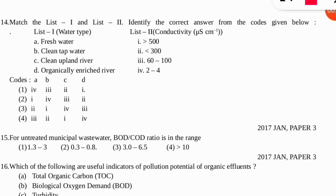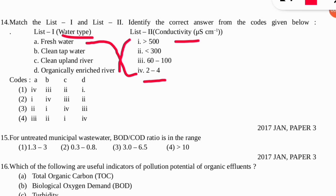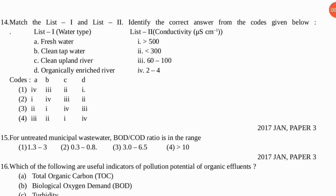The next question: match the water type with its conductivity in micro-siemens per centimeter. Water with more ions is more polluted and has higher conductivity. Fresh water has the least conductivity — two to four. Organically enriched river has the highest conductivity — greater than 500. These match with option number one, which is the correct option. For the next question: for untreated municipal wastewater, the BOD to COD ratio will be in what range? COD (chemical oxygen demand) will be more, so the ratio is less than one — correct option is number two.